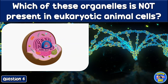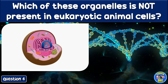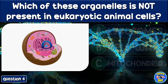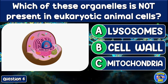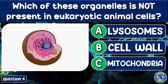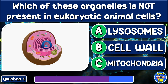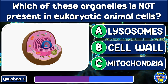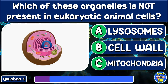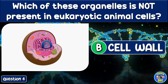Which of these organelles is not present in eukaryotic animal cells? Lysosomes, cell wall, or mitochondria? Cell wall.